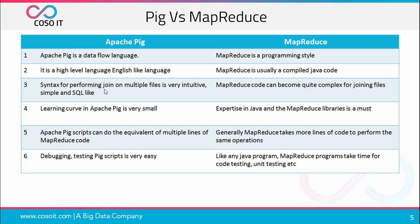The syntax for Pig for performing joins on multiple files is very intuitive and quite simple, like SQL, while MapReduce code becomes quite complex for join operations. The learning curve for Apache Pig is very small, while expertise in Java and MapReduce libraries is a must to run a MapReduce code. Apache Pig scripts can do the equivalent of multiple lines of MapReduce code, while MapReduce takes more lines of code to perform the same operations.